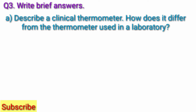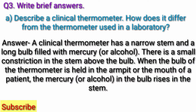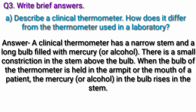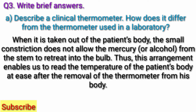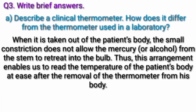Question 3A: Describe a clinical thermometer. How does it differ from the thermometer used in a laboratory? Answer: A clinical thermometer has a narrow stem and a long bulb filled with mercury or alcohol. There is a small constriction in the stem above the bulb. When the bulb of the thermometer is held in the armpit or the mouth of a patient, the mercury or alcohol in the bulb rises in the stem. When it is taken out of the patient's body, the small constriction does not allow the mercury from the stem to retreat into the bulb. Thus, this arrangement enables us to read the temperature of the patient's body at ease after the removal of the thermometer from his body.